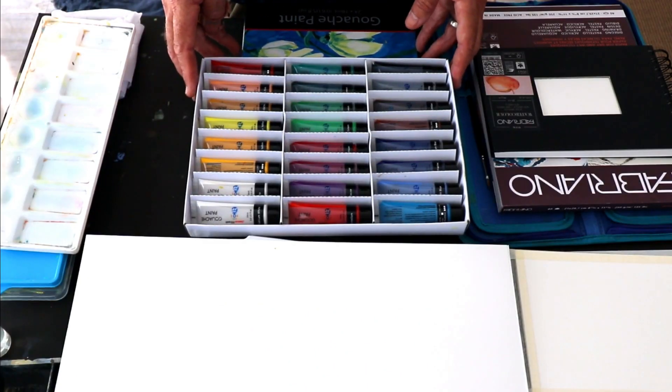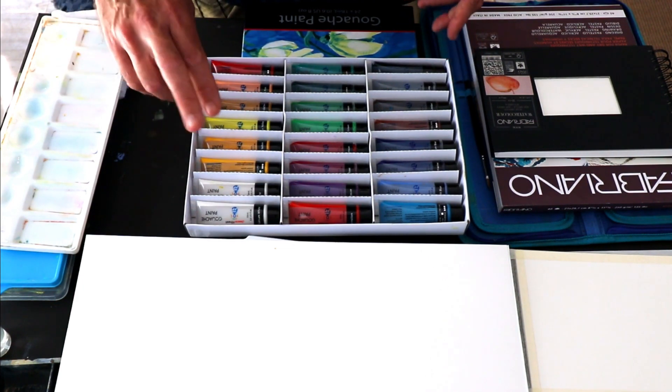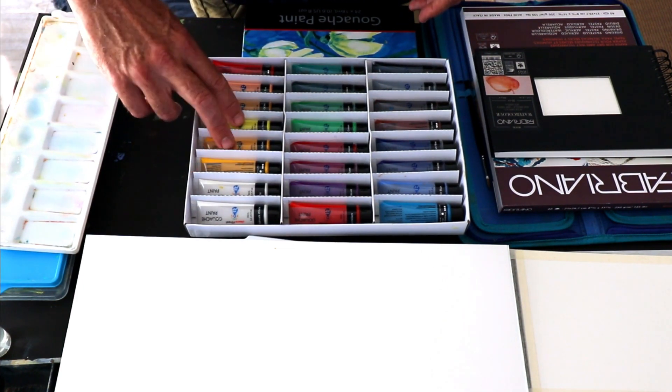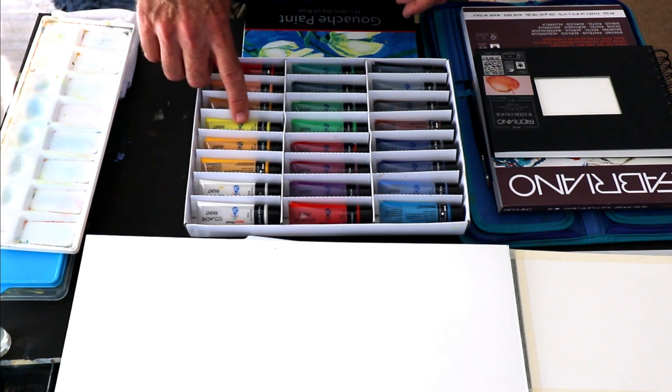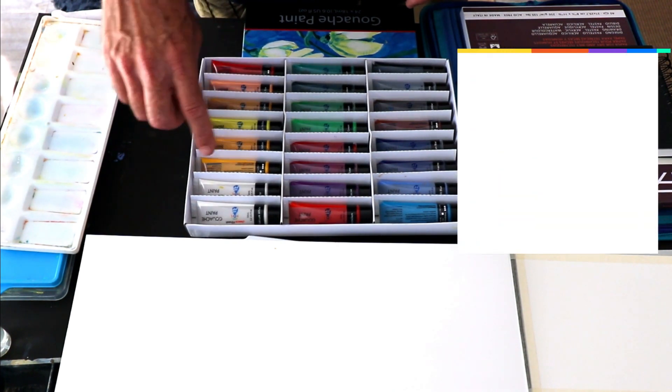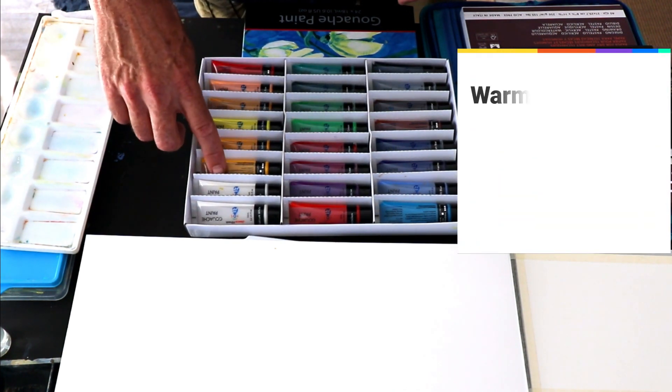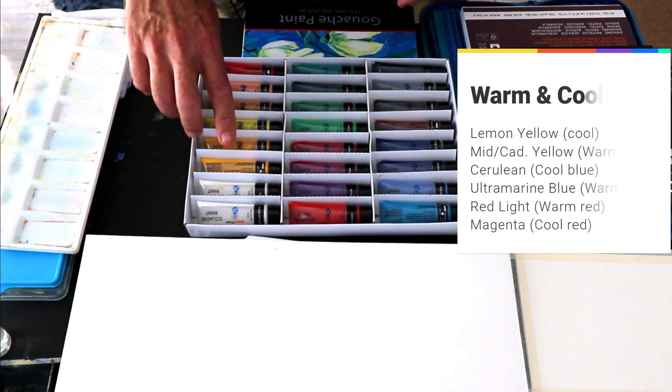So what do I mean by warm and cool? Well, the primary colours yellow, lemon yellow will be your cool colour and a mid or a cadmium yellow would take care of the warm.